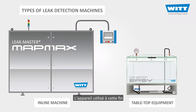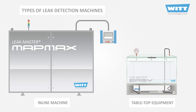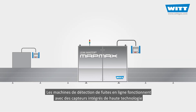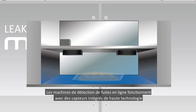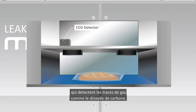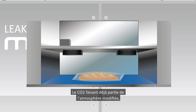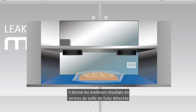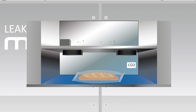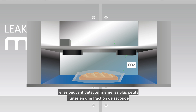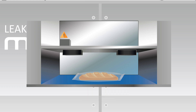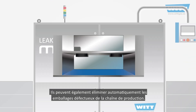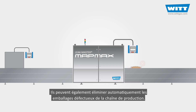The device used for this purpose could be in-line or the type used in the laboratory. In-line leak detection machines work with integrated high-technology sensors which detect trace gases like carbon dioxide. CO2 is already part of the modified atmosphere — it delivers the best results in terms of relevant leak size, and it's not expensive. They can detect even the smallest leaks in a fraction of a second when the trace gas escapes from the packages, and can automatically remove faulty packs from the production line.